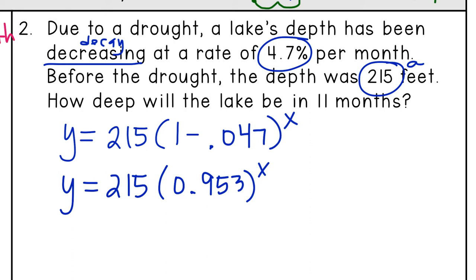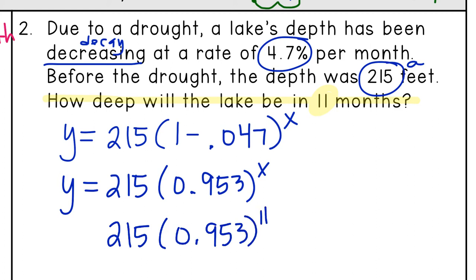Simplifying: one minus 0.047 gives me 0.953 to the x power. Now they're asking how deep will the lake be in 11 months, so we plug in 11: 215 times 0.953 to the 11th power. Into the calculator, I get 126.6. We have to label it — we're talking about feet, so 126.6 feet deep.